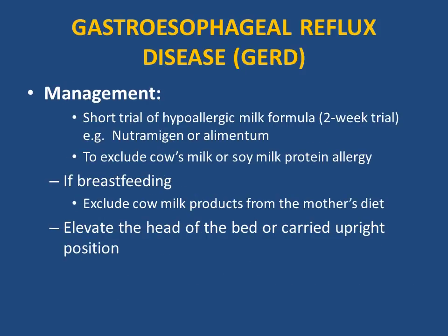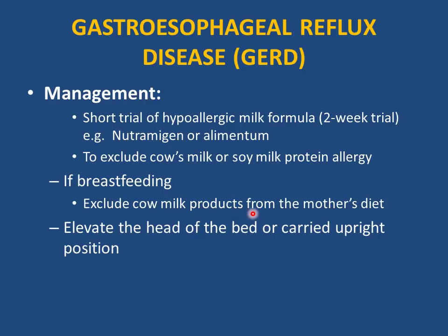A short trial of hypoallergenic formula — such as Nutramigen or Alimentum — can be very helpful, but must be used for at least two weeks to allow gastric mucosa to heal. Reassure parents if the child is still vomiting after two to three days. This trial helps exclude cow's milk or soy protein allergy. If breastfeeding, the mother may exclude cow's milk products from her diet.